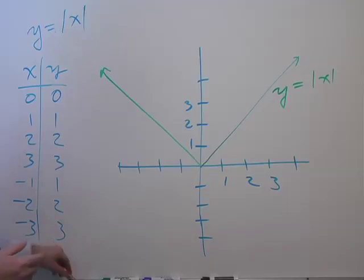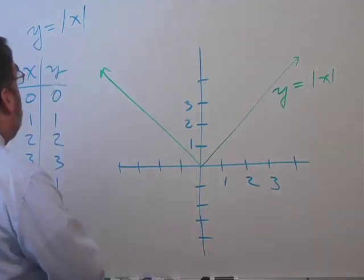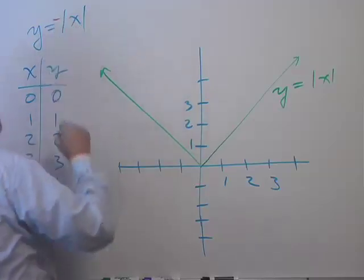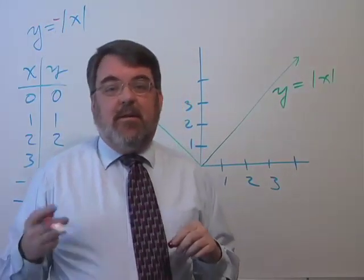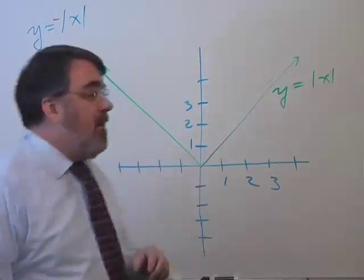And then the question becomes, what happens if you change the sign of the function? And by this I mean, what if you multiply the one side by negative one, or change the function by a negative, multiplying by a negative?